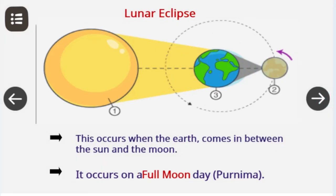The lunar eclipse occurs when the Earth comes in between the Sun and the Moon. As a result, the Earth blocks the light of the Sun from reaching the Moon's surface and casts its shadow on the Moon.